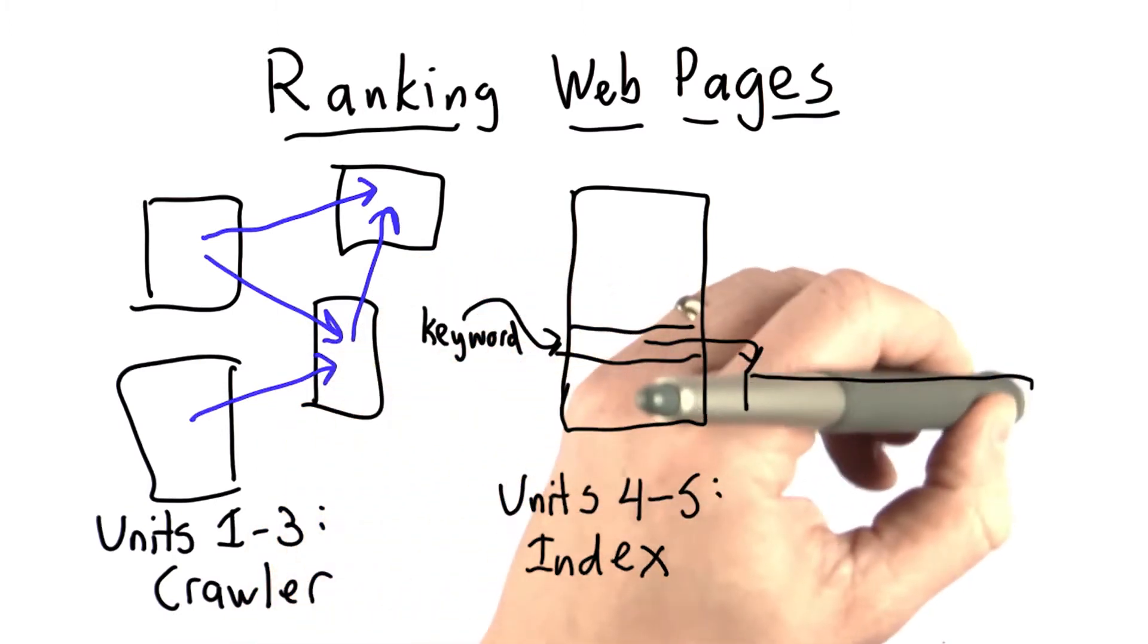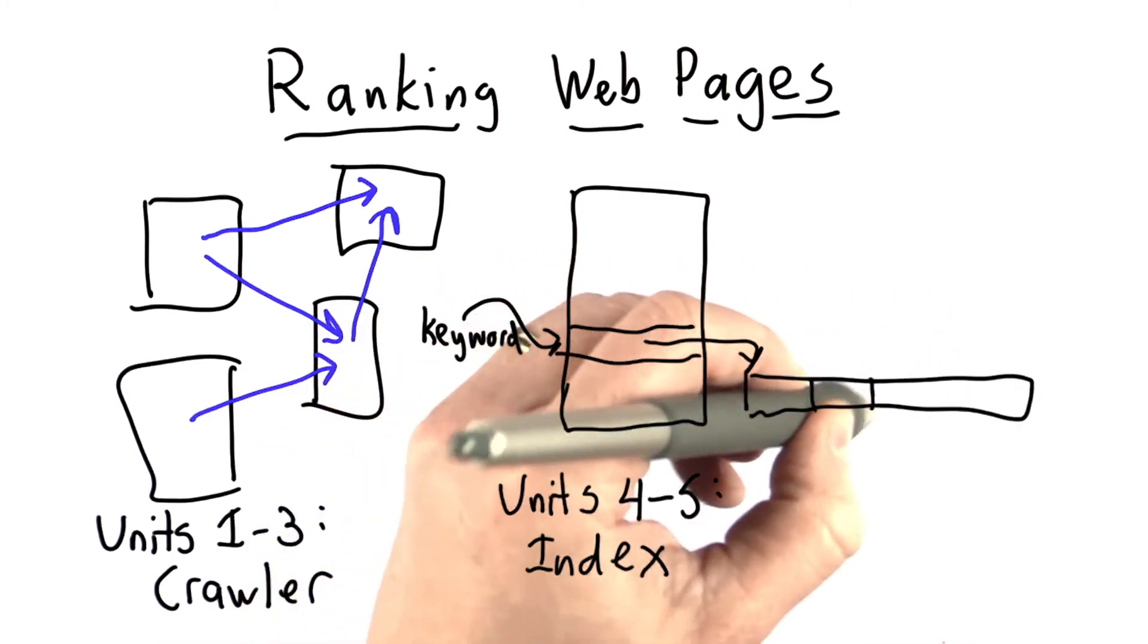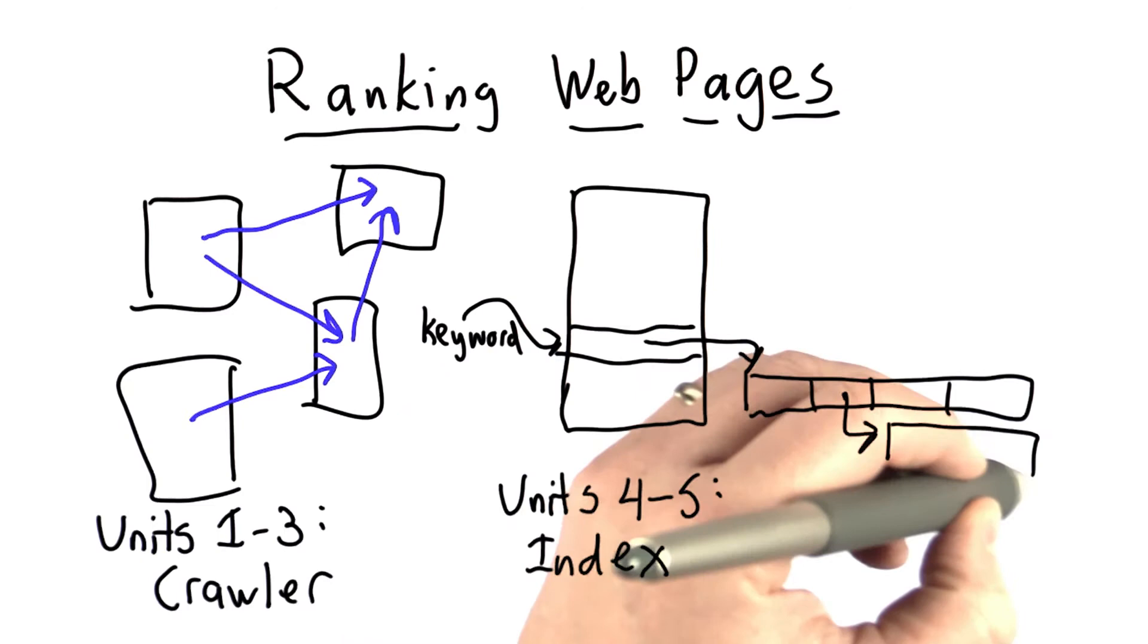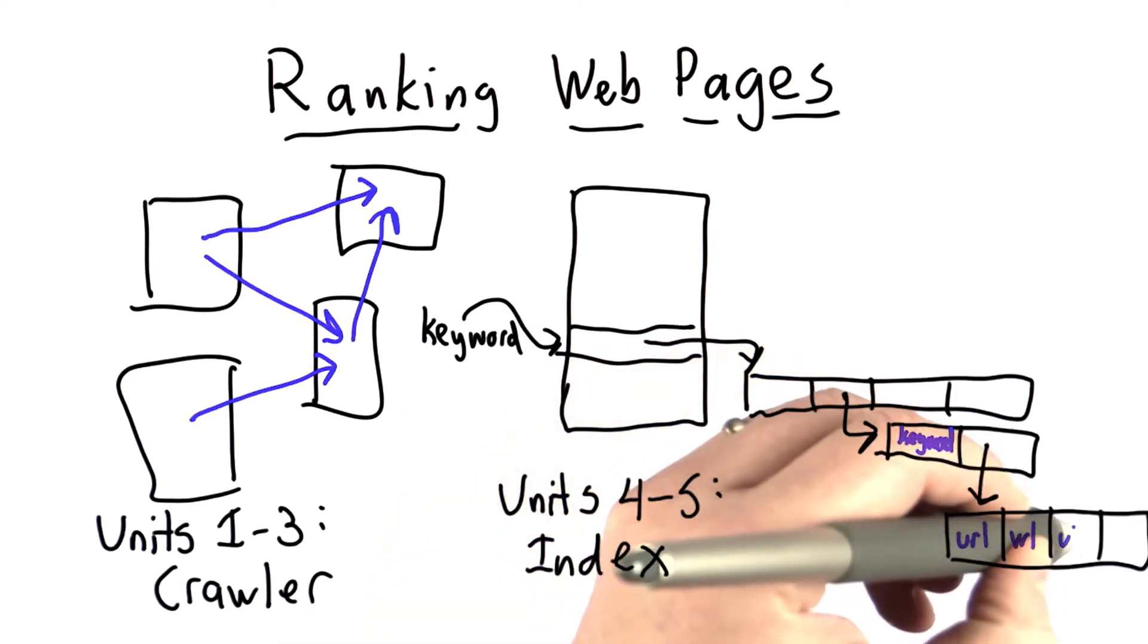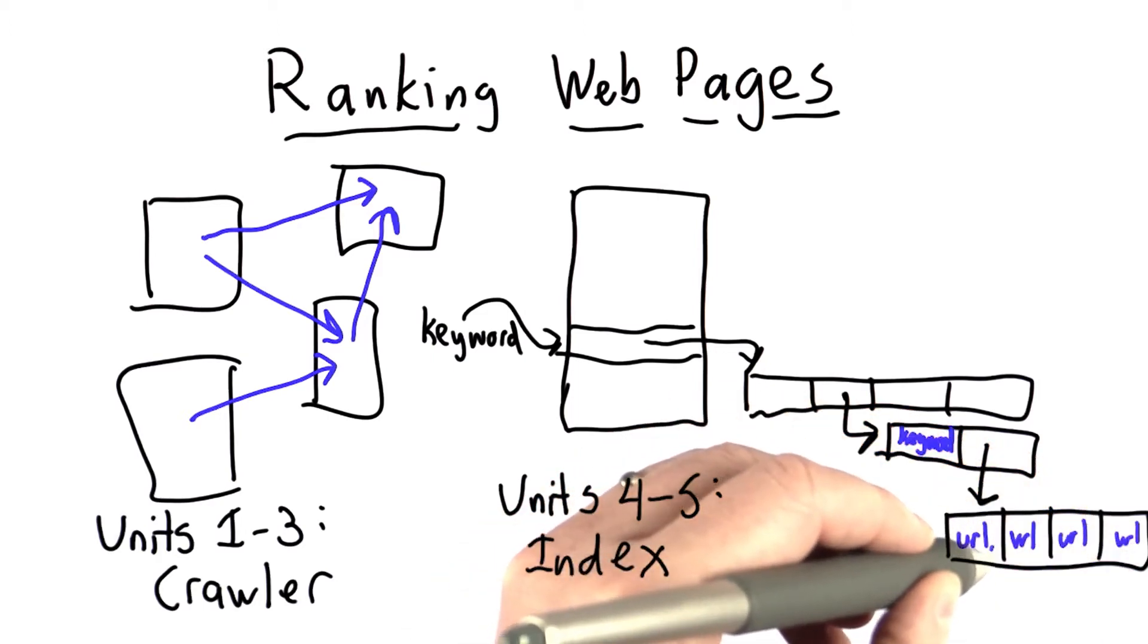And we would follow that, and we could look through each of those entries to find the one that matched the keyword that we were looking for. And as its value, it would have a list of all the URLs where that keyword appears.